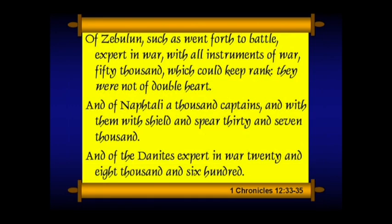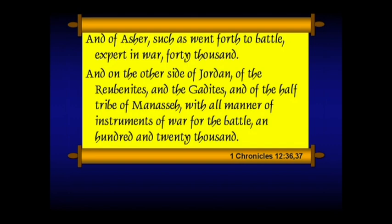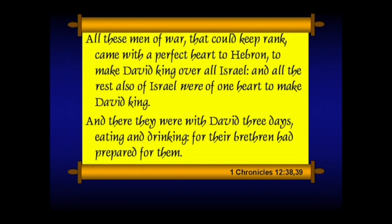Moving on: of Zebulun, such as went forth to battle, expert in war with all instruments of war, 50,000, which could keep rank, and they were not of double heart. And Naphtali, a thousand captains with shield and spear, 37,000. Of the Danites expert in war, 28,600. And of Asher who went to the battle, expert in war, 40,000. On the other side of the Jordan, of the Reubenites, the Gadites, the half-tribe of Manasseh, with all manner of instruments of war for battle, 120,000. And all these men of war that could keep rank came with a perfect heart to Hebron to make David king over all Israel. And all the rest also of Israel were of one heart to make David the king. And there they were with David three days eating and drinking, for their brethren had prepared for them. All the tribes are represented here — this is a time of great festivity and political union.